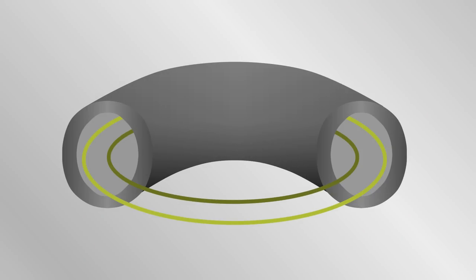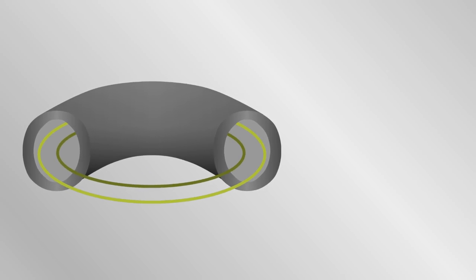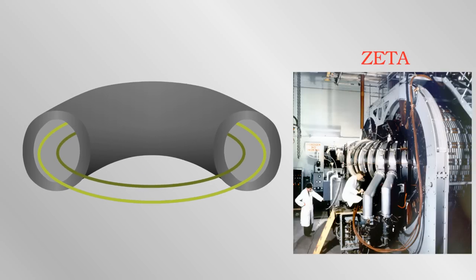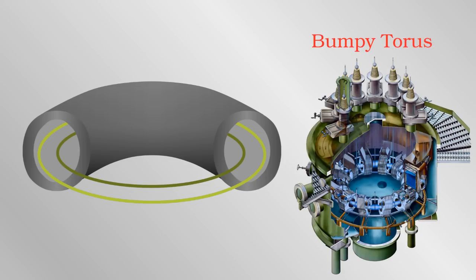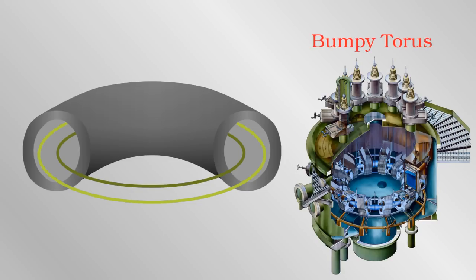Early on in fusion research, it was recognized that curving the mirror machine back in on itself in a torus would completely negate the end losses. A configuration with a purely toroidal magnetic field, so that all the field lines go around in circles, is still vulnerable to the sausage and kink instabilities. Historically, machines such as Zeta in the United Kingdom showed great promise early on, but then failed to reach high temperatures. A concept called the bumpy torus involves a number of magnetic mirrors chained together in a ring, but suffers from all the same issues.